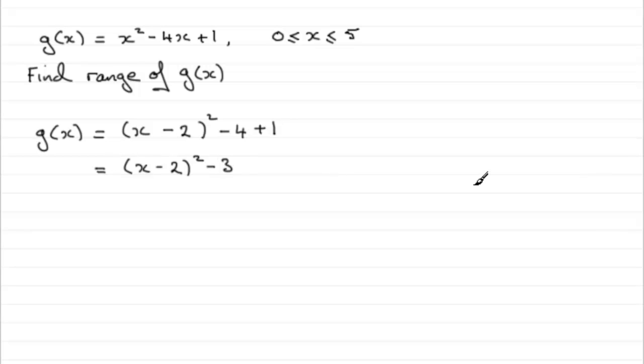And because we've completed the square it makes the sketching of g(x) very easy because it just relies on transformations of graphs.